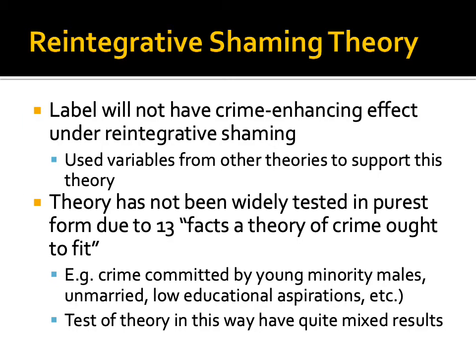Under reintegrative shaming, the label will not have a crime-enhancing effect because the person is being reintegrated into society. The theory borrows variables from other theories — specifically attachment from bonding theory and differential association from social learning theory. However, the theory has not been widely tested in its purest form because it has 13 'facts a theory of crime ought to fit,' which makes it in no way parsimonious. Tests of the theory have produced quite mixed results because of these many different required facts.